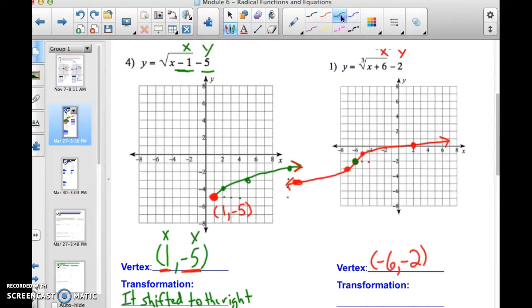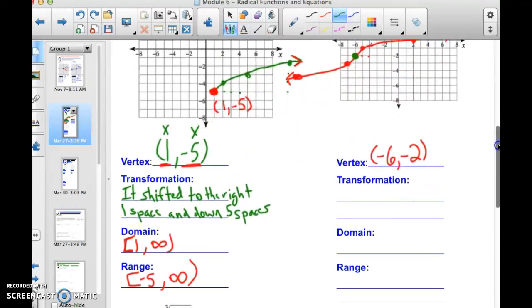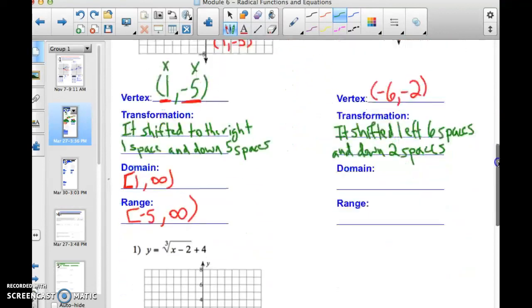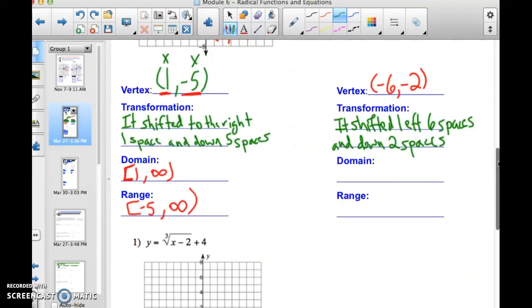So I'm going to draw the vertex in green there. So the transformation that happened, it shifted left 6 spaces this time and down 2 spaces. Now, for cube root functions, if you notice, this goes to the right forever and up forever. This goes to the left forever and down forever. That will be the case for every cube root function. So the domain and the range are both all real numbers.